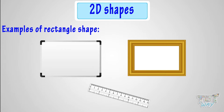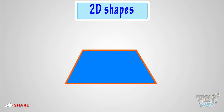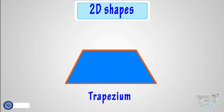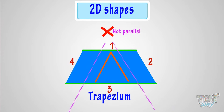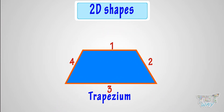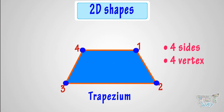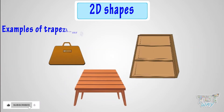Now let's learn another four-sided shape. This is also a four-sided shape called a trapezium. It is a four-sided shape where one pair of sides is parallel and the other pair is not parallel. As here, these sides are parallel to each other, and these two sides are not parallel to each other. It has four sides and four edges. These are various things that are trapezium in shape.